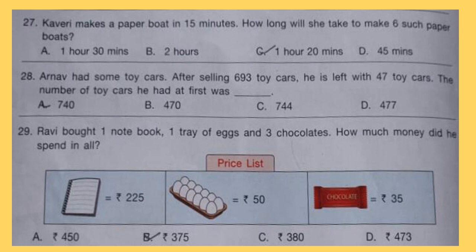Question 28: Arav had some toy cars. After selling 693 toy cars he is left with 47 toy cars. The number of toy cars he had at first was dash.